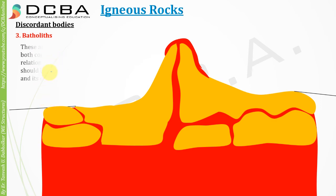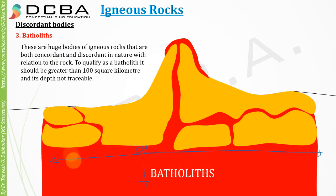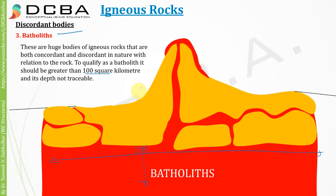The third discordant form is batholith. These are huge bodies of igneous rocks that are both concordant and discordant in nature. To qualify as a batholith, the area should be greater than 100 square kilometers and its depth should not be traceable. It spans both horizontally and vertically to such an extent that it can be considered both concordant and discordant — a separate structure in itself.